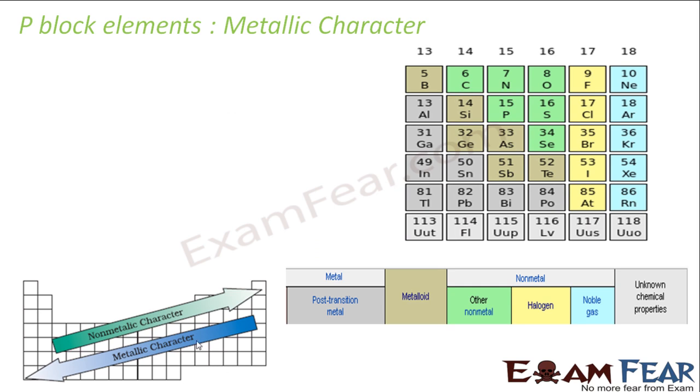If you see the trend in the metallic character, we have learned this also. If you go down the group, the metallic character increases. This side also it increases. So if you see here, the brown ones and the grey ones are my metalloids. Let us talk about the metal first. These are my metals actually: aluminum, gallium, tin, all these are metals. And then we have metalloids in the brown and then we have non-metals also.